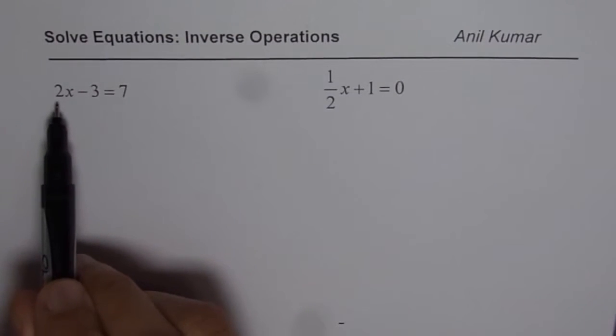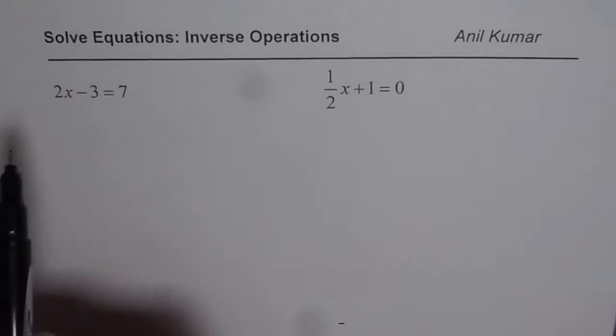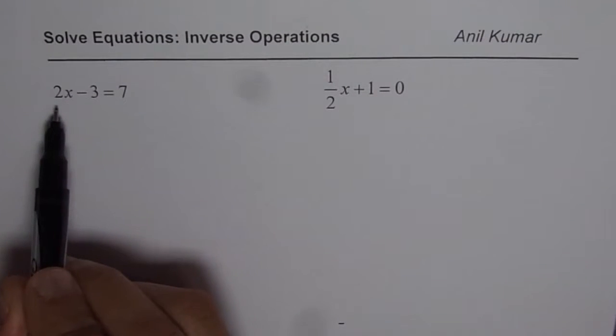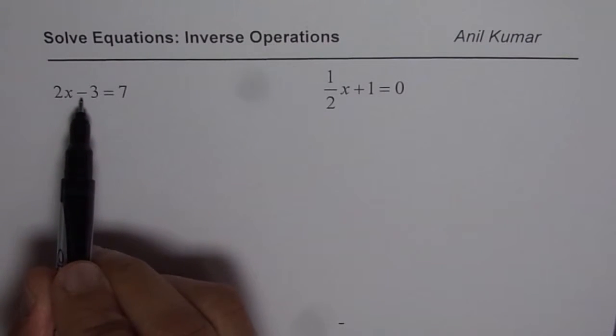So let's begin with the first one which is 2x minus 3 equals 7. To solve equation means to find value of x. Now that means we need to isolate x. We have 2x minus 3 on the left side. Let us first get rid of minus 3.